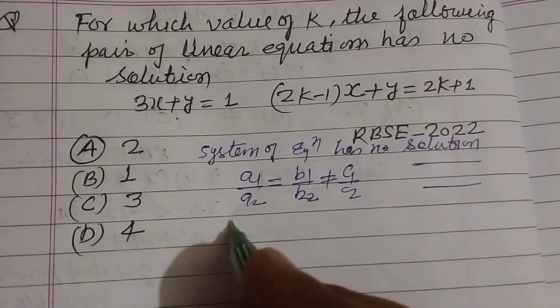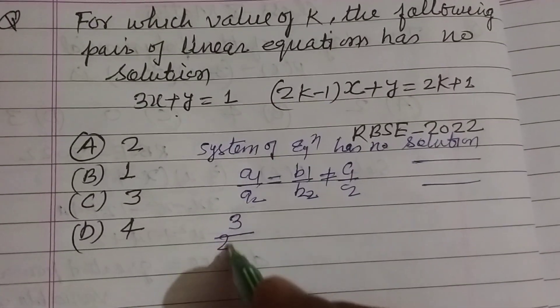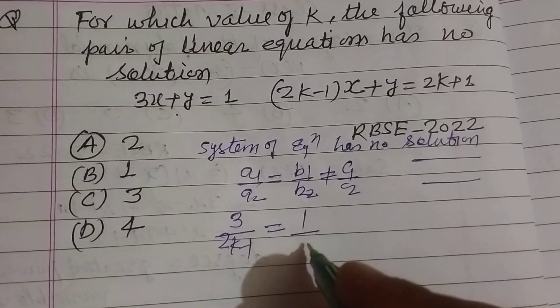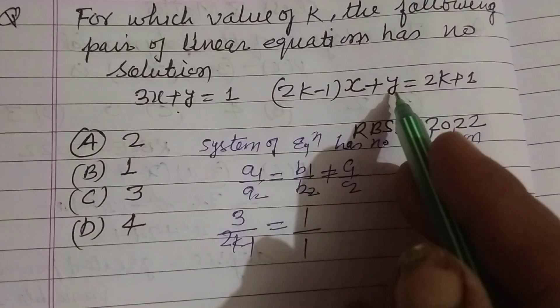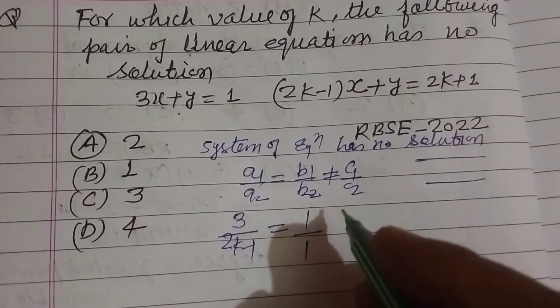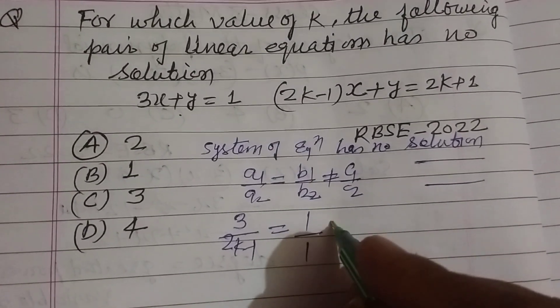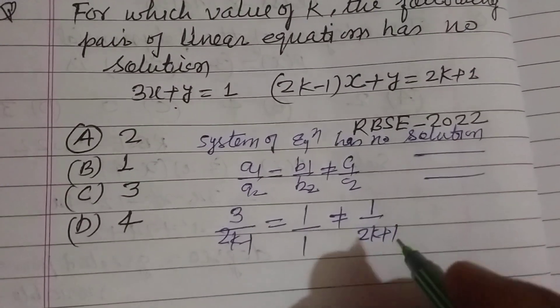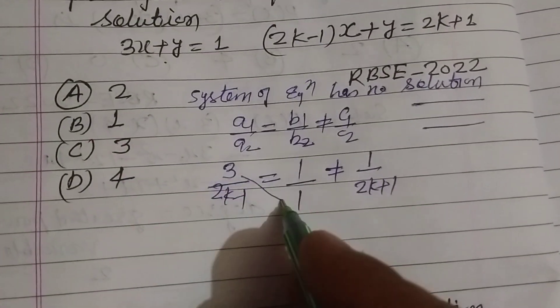We identify the coefficients from the equations 3x+y=1 and (2k-1)x+y=2k+1: a1 is 3, a2 is 2k-1, b1 is 1, and b2 is also 1. The constants are c1 = 1 and c2 = 2k+1. Taking the first two ratios...